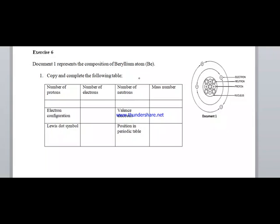According to Document 1, the composition of the Beryllium atom shows electrons inside the nucleus, protons represented by a positive plus sign, and the other circle representing the neutrons. We will copy and complete the following table: the number of protons in the Beryllium atom — 1, 2, 3, and 4.